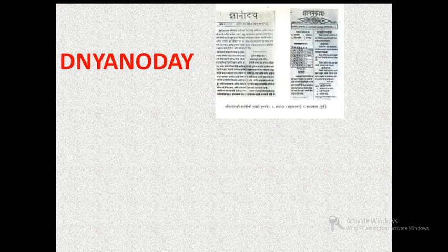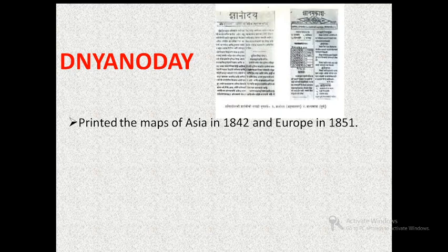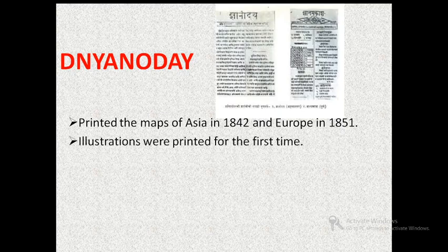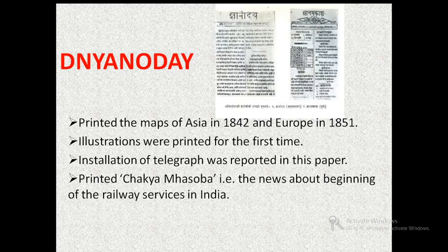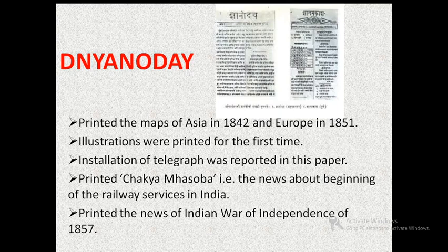Nyanodai: this newspaper has the honor of printing the first illustrations, i.e., pictures, in an Indian newspaper. It printed the maps of Asia in 1842 and of Europe in 1851. The newspaper also printed news about the installation of telegraph, and about the beginning of railway services in India under the title 'Chakya Mahasoba,' which means 'Mahasoba with wheels.' The news about the Indian war of independence of 1857 was also printed in Nyanodai.